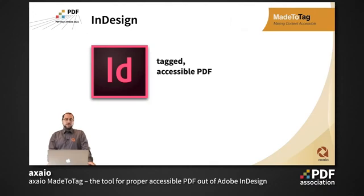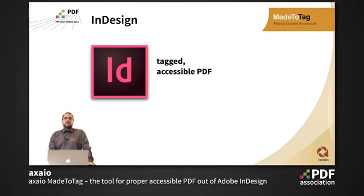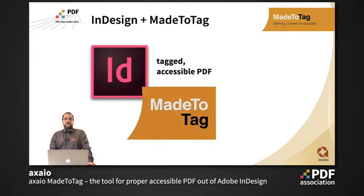As you may know, InDesign itself can already create tagged accessible PDF, but the way to do so is a bit cumbersome and not very efficient. All the different steps are in different sections of the program, and also the outcome is not a real PDF UA document — it's not compliant with PDF universal accessibility. That's where Me2Tag comes into the game.